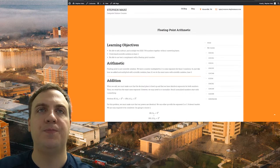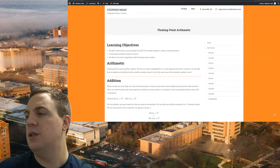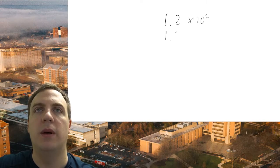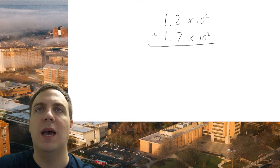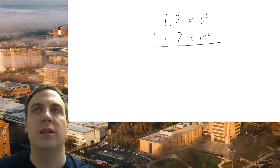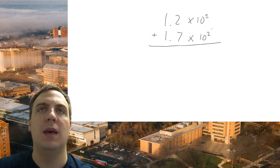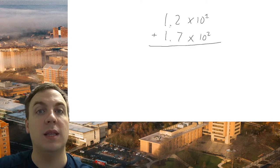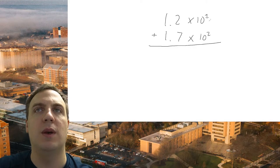For addition, let's recap with a base 10 example. If I have 1.2 times 10 to the first and 1.7 times 10 squared and I want to add them, I can't until the powers are the same. Addition requires lining up the decimal points — since we have two different powers of 10, the decimal points don't actually line up.